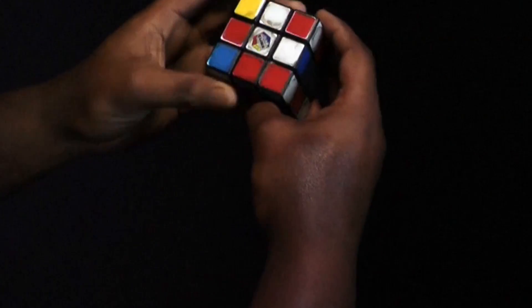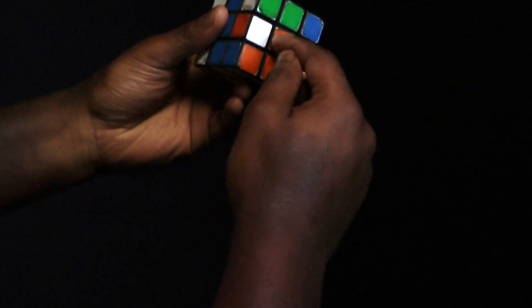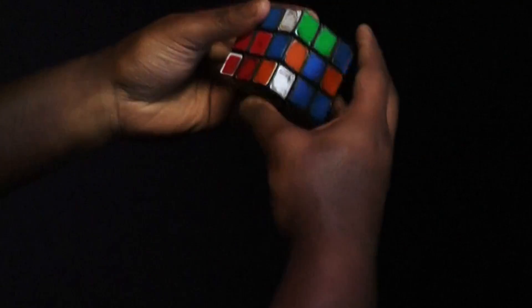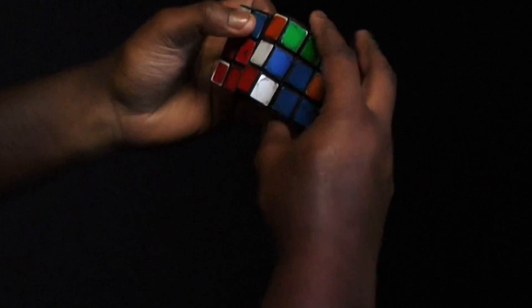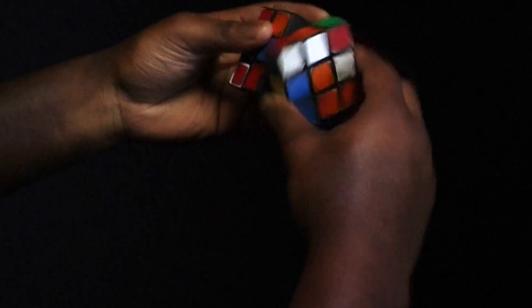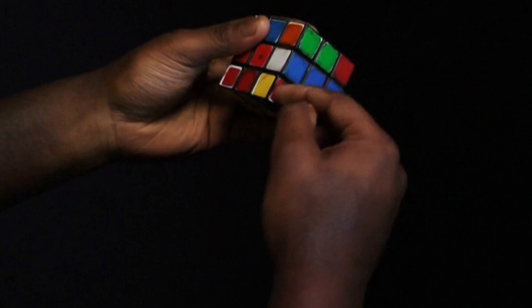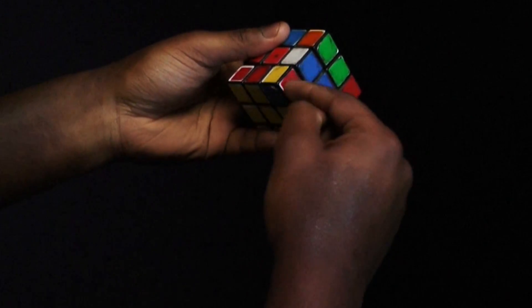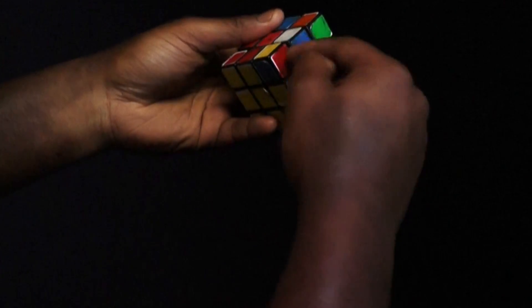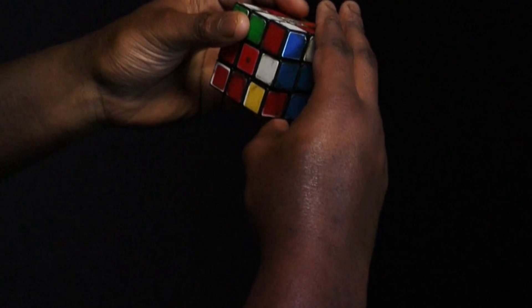Now here, we need to move this out, so we can put it here. So what we can do, is we can just move that out, which leaves us to be able to move that one in. Now here, we need to get this yellow, need to get this, so it's yellow on the bottom, to match with this side.